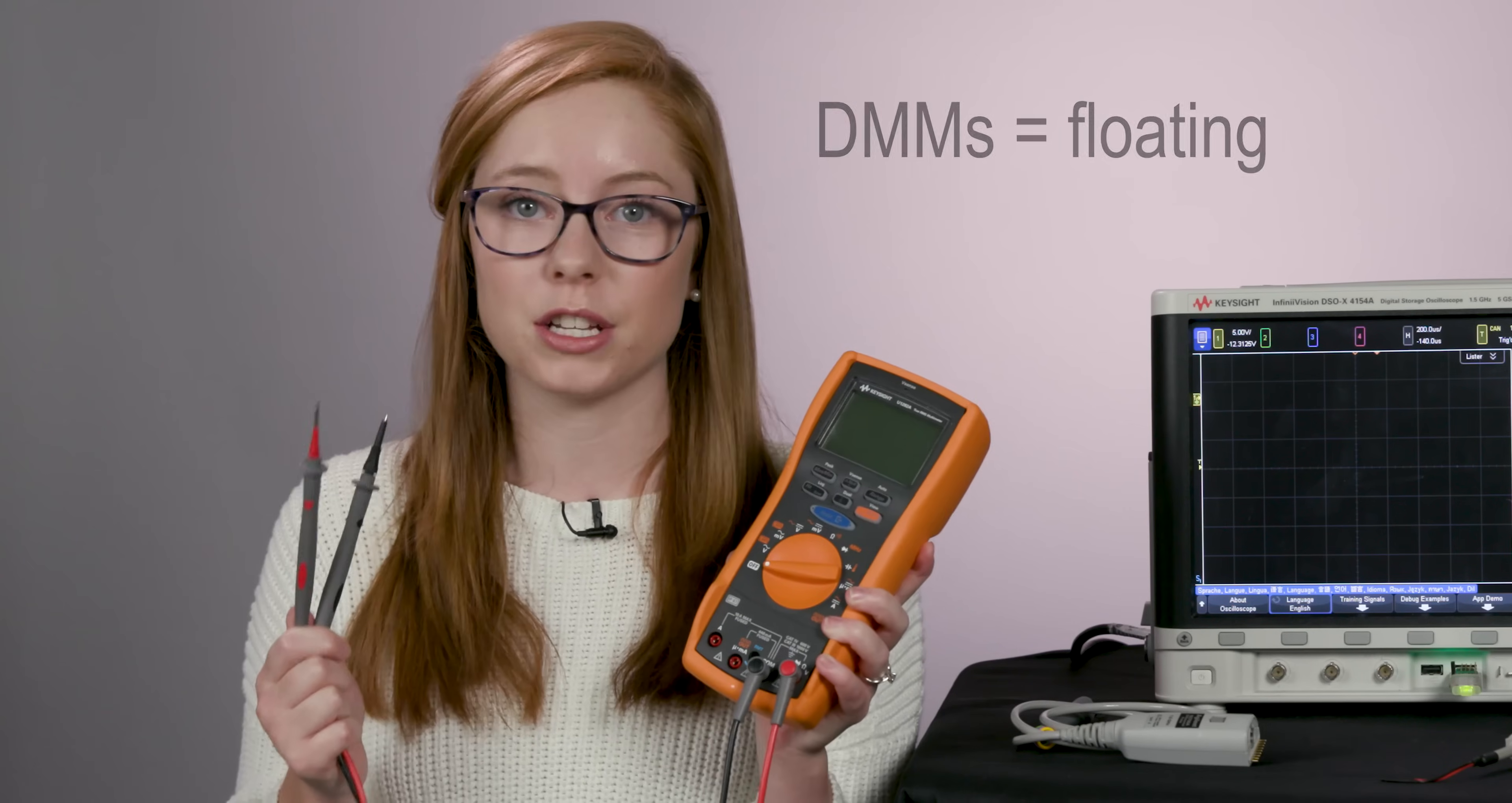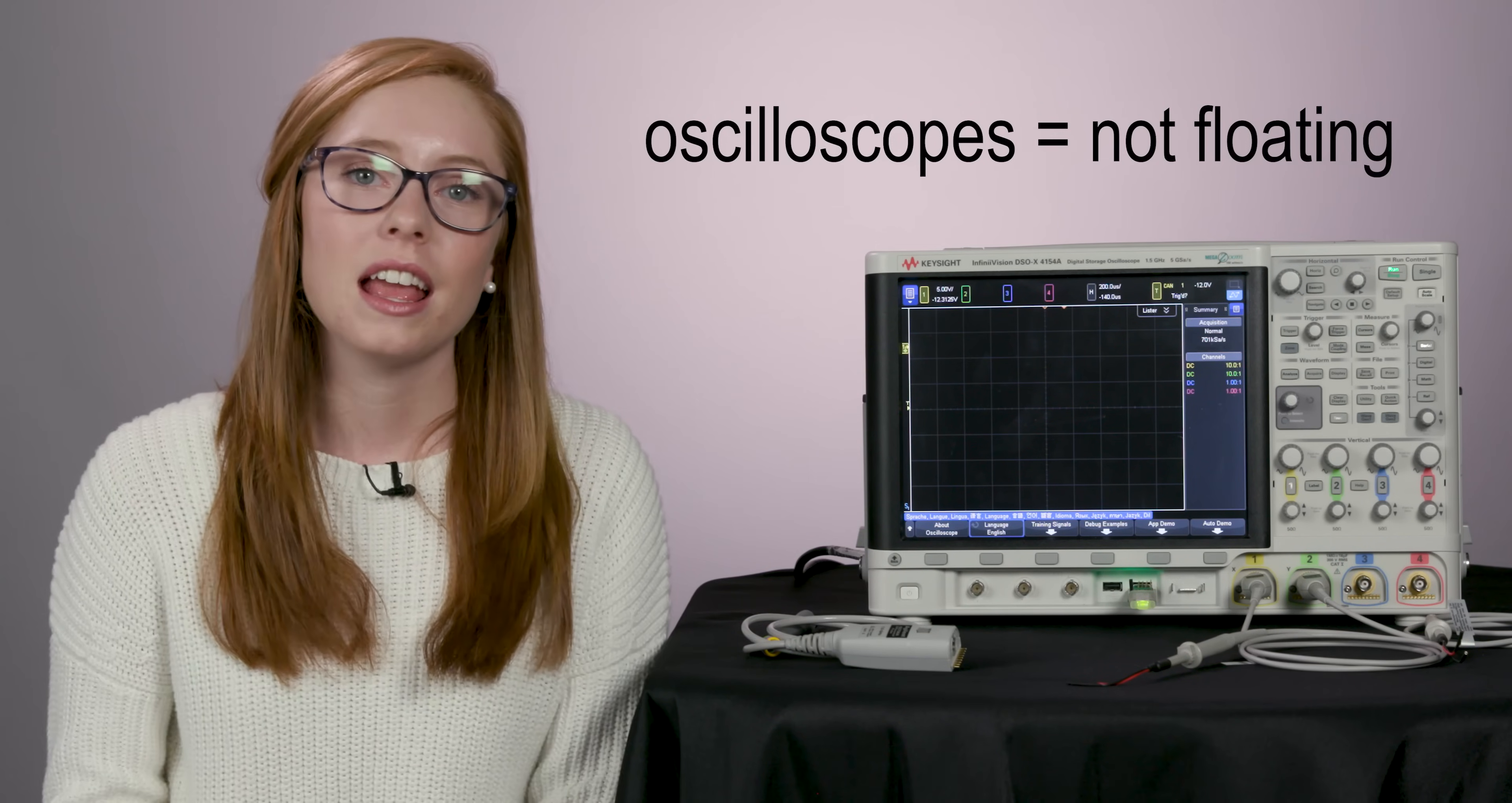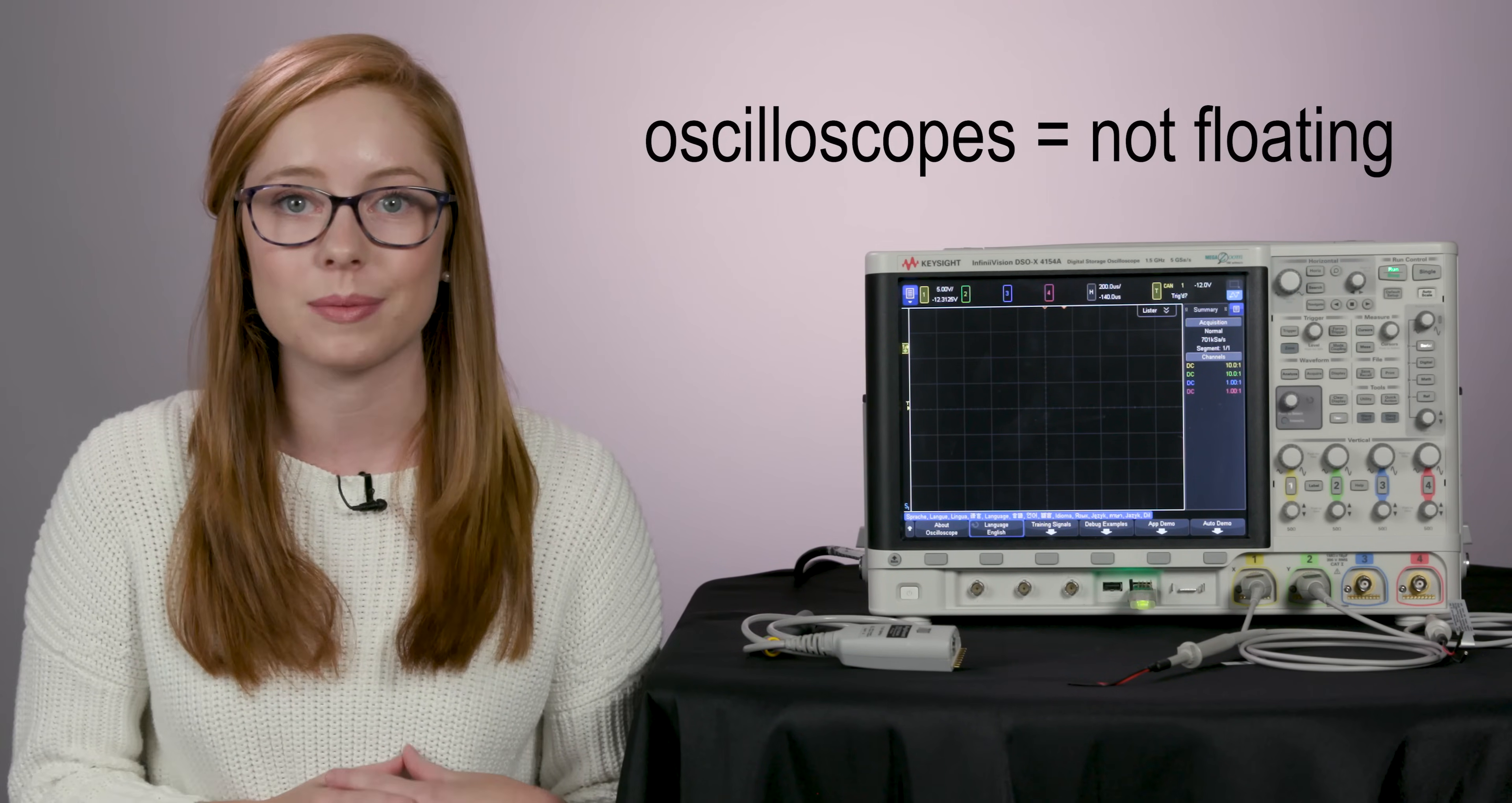It's important to understand that some measurement tools like this DMM make floating measurements, so you can use these two probes to measure any two points on your board. But oscilloscopes are not floating. They are inherently ground-referenced, so they force you to make measurements with respect to ground.